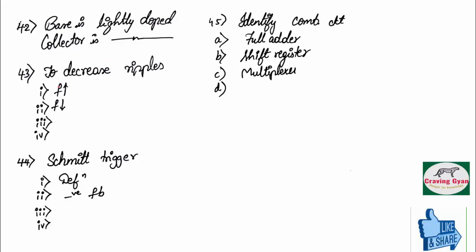And forty-third question, to decrease ripples, frequency has to be increased, frequency has to be decreased. Similar to this, the question was framed. We know, to decrease ripples, frequency should be more.